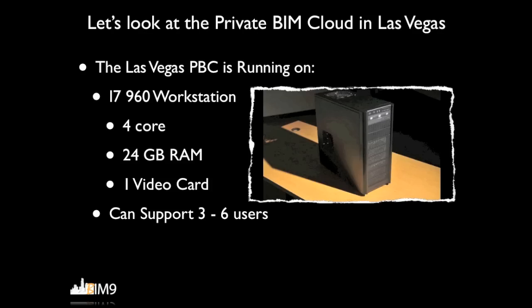What kind of machine were we connected to? We went to our local electronics store in Las Vegas — Fry's — and picked up an i7-960 processor with four cores, 24 gigs of RAM, some hard drive space, and a video card. The interesting thing is we can support three to six users simultaneously on that machine at the same performance you just saw me do with one user. So yes, three to six users can access that same machine at the same time and get the same Revit performance shown in the presentation — minus the movie magic for Revit load times. That's the beauty of this mechanism: multiple users accessing the same system at the same time from any location with an internet connection.